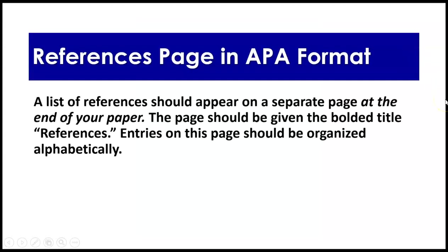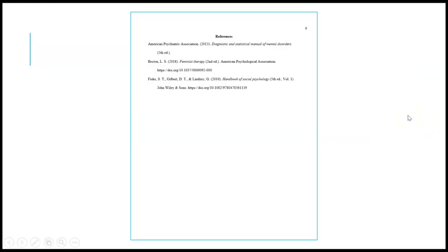Almost done. The references page in APA format: a list of references should appear on a separate page at the end of your paper — I always call it the movie credits at the end of the movie. The page should be given the bolded title 'References.' Entries should be organized alphabetically. It looks like this is page nine, all double-spaced, with a hanging indent. Three entries there.